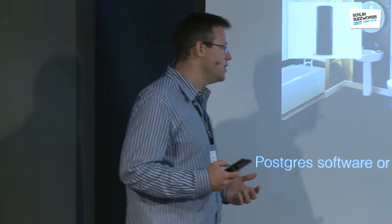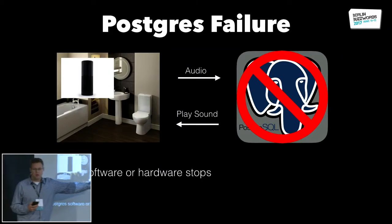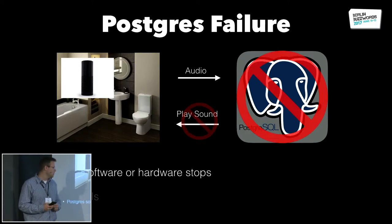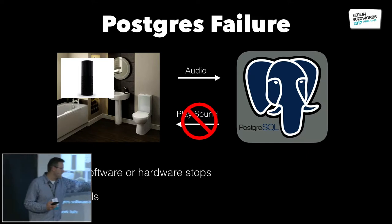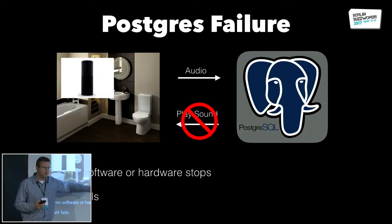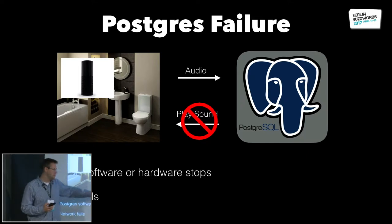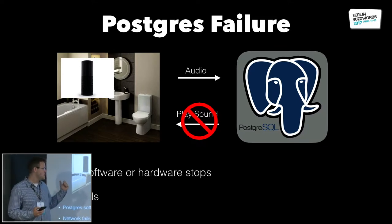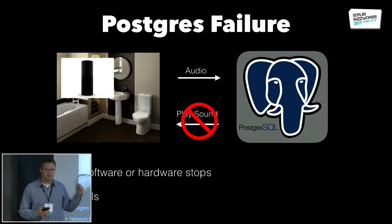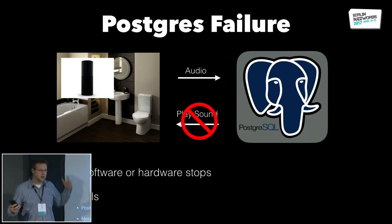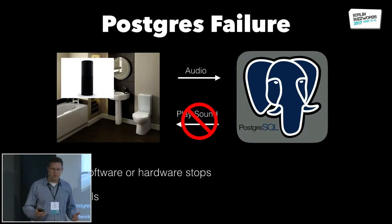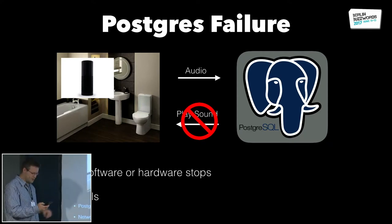With Postgres, what are the different ways this app can fail? Certainly Postgres can go down — software or hardware — and my app becomes unavailable. I could also lose a network message, which is a really common problem people don't account for. Maybe I said Beetlejuice three times, it sent a message back to play a sound, but that message got lost and it reset the count. Now I have to say Beetlejuice six times. That's awful.